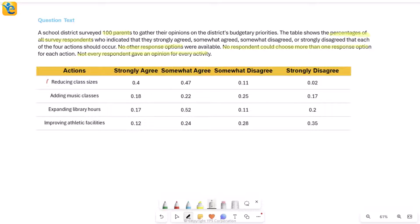For the first activity of reducing class sizes, it's not necessary that I got an opinion from all 100 parents. The parents who selected strongly agree - how many are these? This 0.4 is the percentage of respondents, the percentage itself. It's not 0.4%. So if I calculate how many parents, it's this percentage of 100, which means 40 parents selected strongly agree for this first activity.